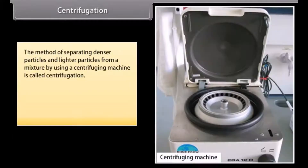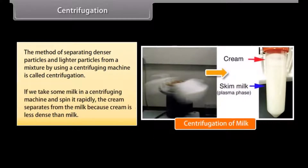Centrifugation. The method of separating denser particles and lighter particles from a mixture by using a centrifuging machine is called centrifugation. For example, if we take some milk in a centrifuging machine and spin it rapidly, the cream separates from the milk because cream is less dense than milk.